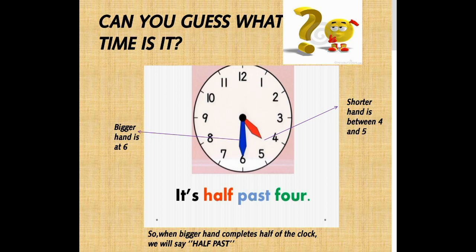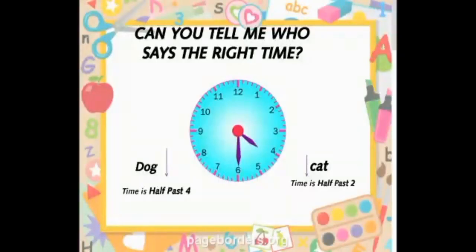Can you guess what time it is? You can observe that the bigger hand is at 6 and the shorter hand is between 4 and 5. So the time is half past 4. When the bigger hand completes half of the clock, we will say half past.